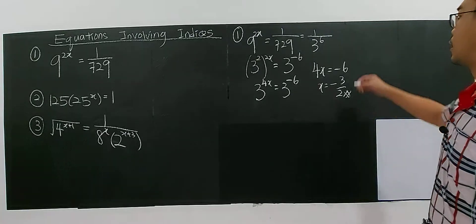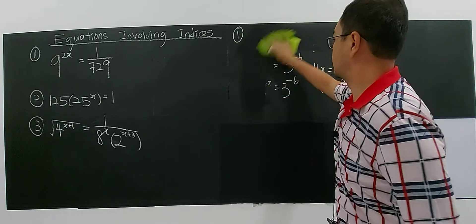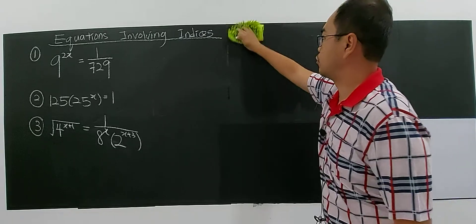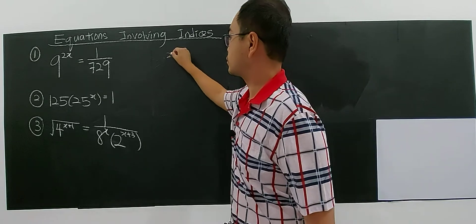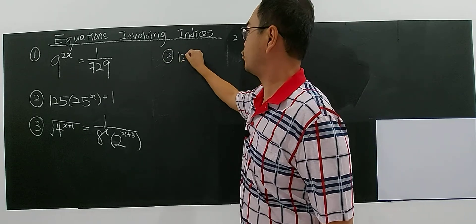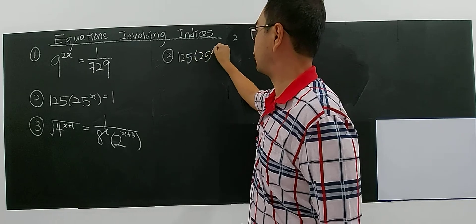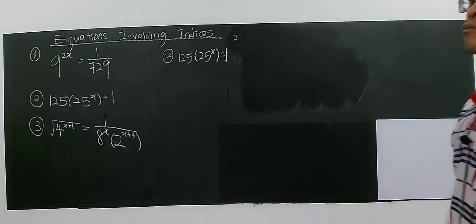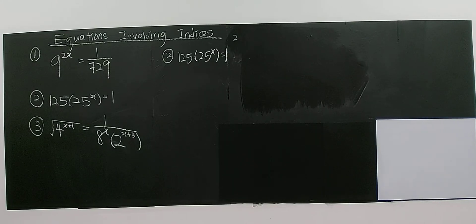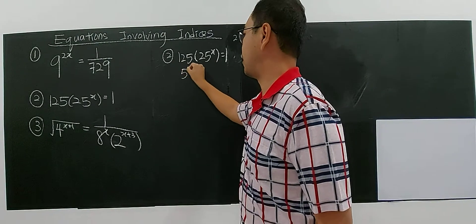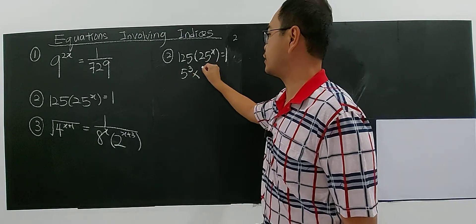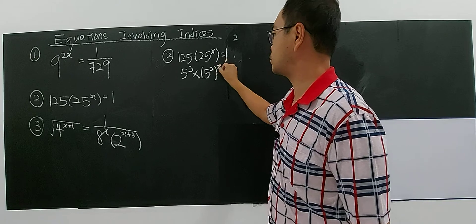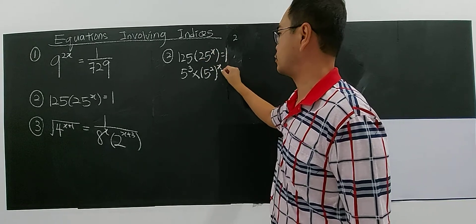Now let's move on to question 2. You have 125 to the power of x equals 1. You know that 125 and 25 also have the same base — the lowest base is 5. 125 is 5 to the power of 3, and 25 is 5 to the power of 2, with the x outside. It equals 1.